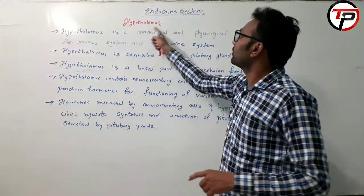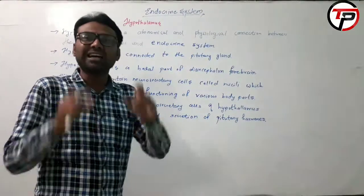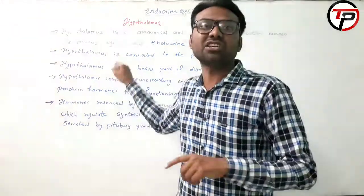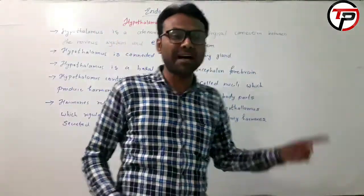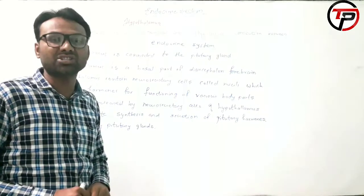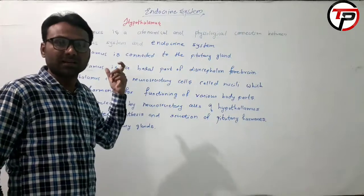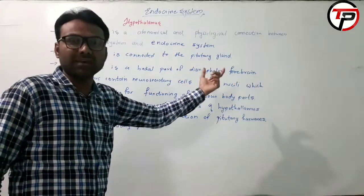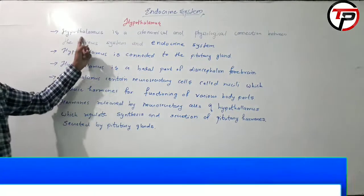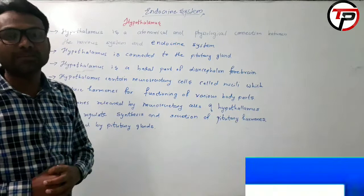The hypothalamus is the part of the brain that has control over the entire endocrine system. The endocrine system also represents the physical connection between the endocrine and nervous systems.